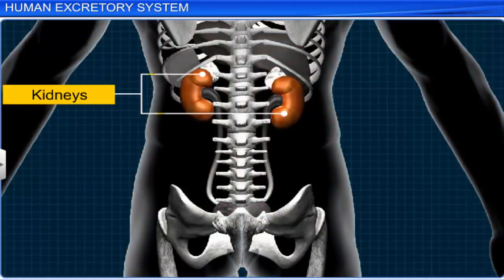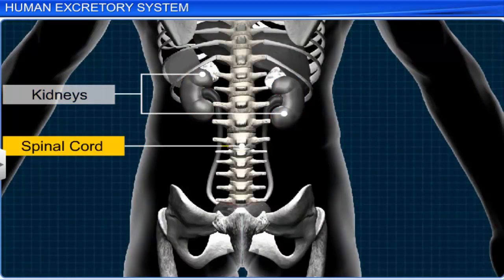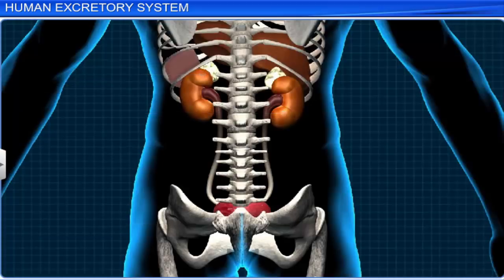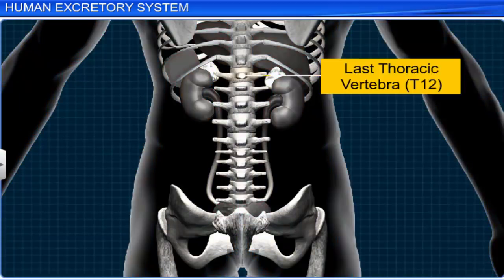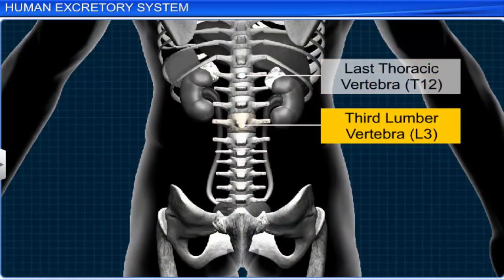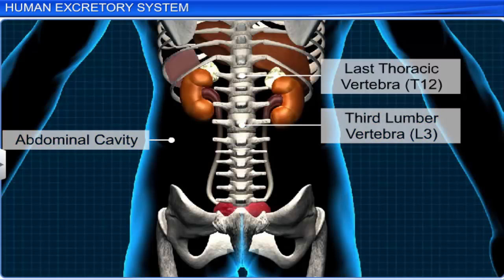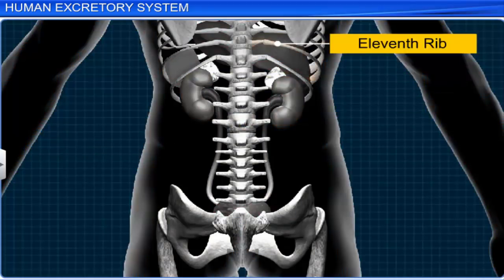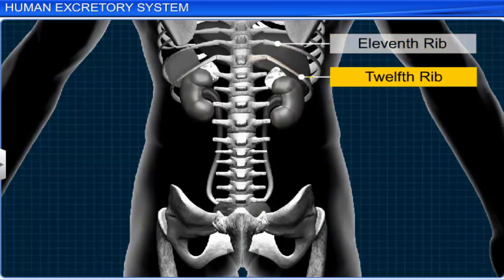The kidneys are compact, bean-shaped organs on either side of the spinal cord in the lower back. More precisely, they are situated between the last thoracic and third lumbar vertebrae, in close proximity to the dorsal inner wall of the abdominal cavity. The eleventh and twelfth ribs partially protect the upper part of the kidneys.